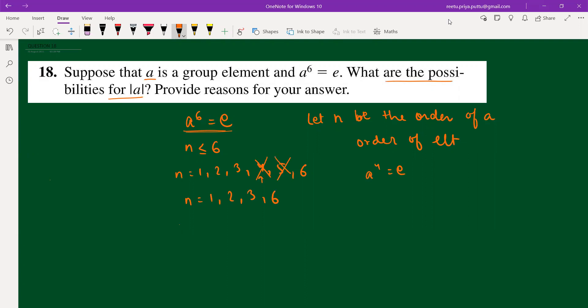If order of A equals 1, that is A equals identity, and we know that A to the power 6 is E to the power 6, which equals E. If order of A is 2, that is A square equals identity, we can cube it. That means A square to the power 3, which equals E to the power 3 equals identity.